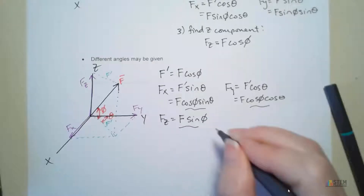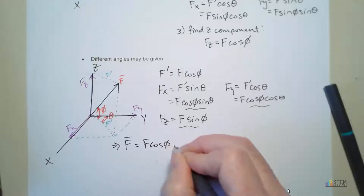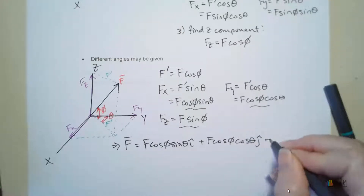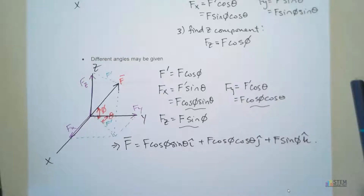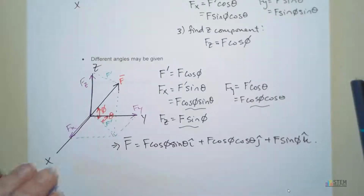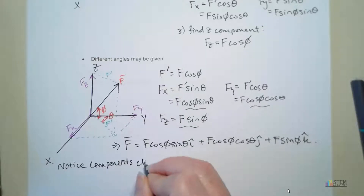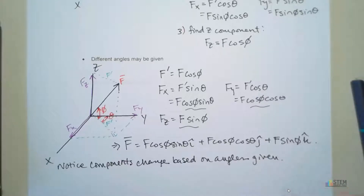Now you've got your three components and you can write out your force vector: F cosine phi sine theta i, plus F cosine phi cosine theta j, plus F sine phi k — in newtons or whatever the unit would be. You just have to look at the angles you're given and try to relate them to the XY axis or coordinate system. The components change based on what you're given, so there is no set formula because you're going to be given different angles.